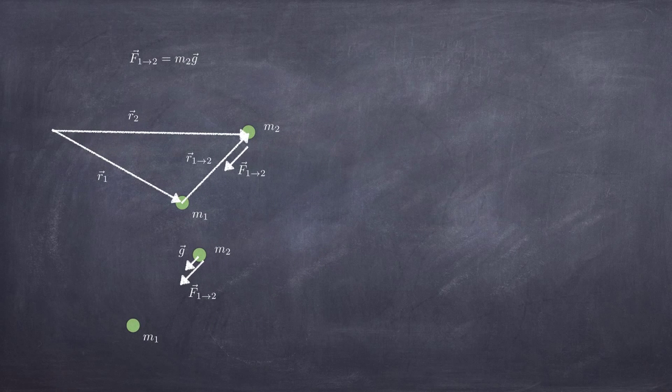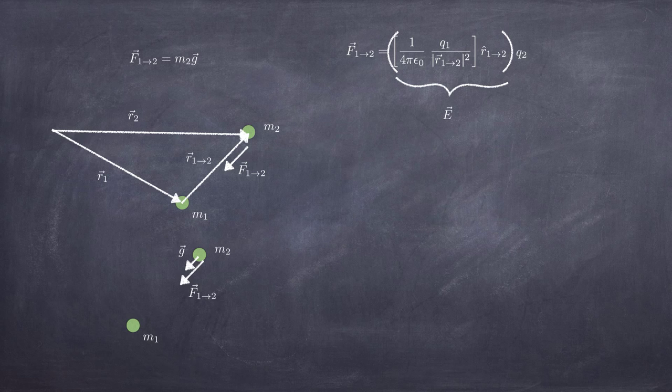Now, you can do the same trick with Coulomb's law. You can factor out a charge. You can group everything else into a clump and call it the electric field. And then you can compute the force as the charge 2 multiplied by the electric field produced by charge 1 in which it is immersed. That's the idea.